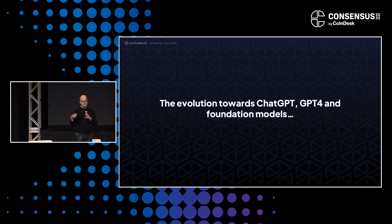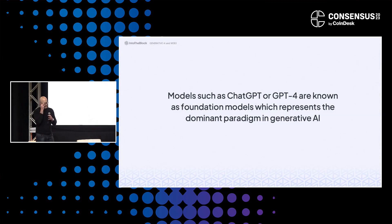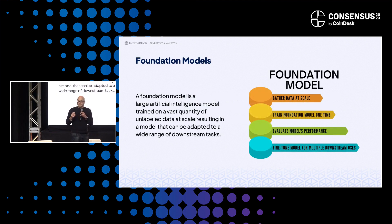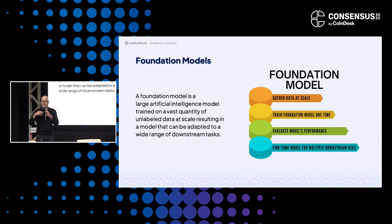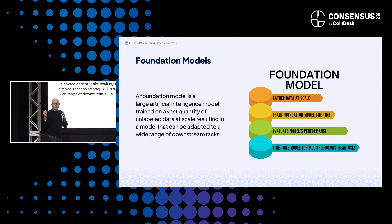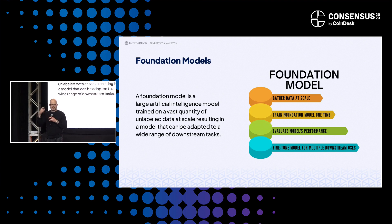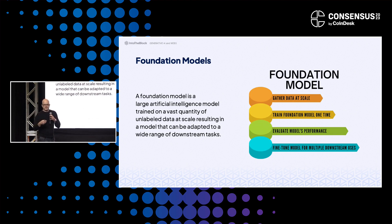We've been hearing a lot about ChatGPT, GPT-4. Where do they come from? The paradigm in the AI industry for these models is known as foundation models. A foundation model is different from traditional machine learning, in which we used to train models with labeled data — like an image classification algorithm where we'd say this is a cat, this is a dog. Now these models are trained with unlabeled data — a lot of unlabeled images, Wikipedia, things like that. And what happened is they started exhibiting emergent properties that we didn't plan for: they were able to generate emails, generate images from text, and things like that.